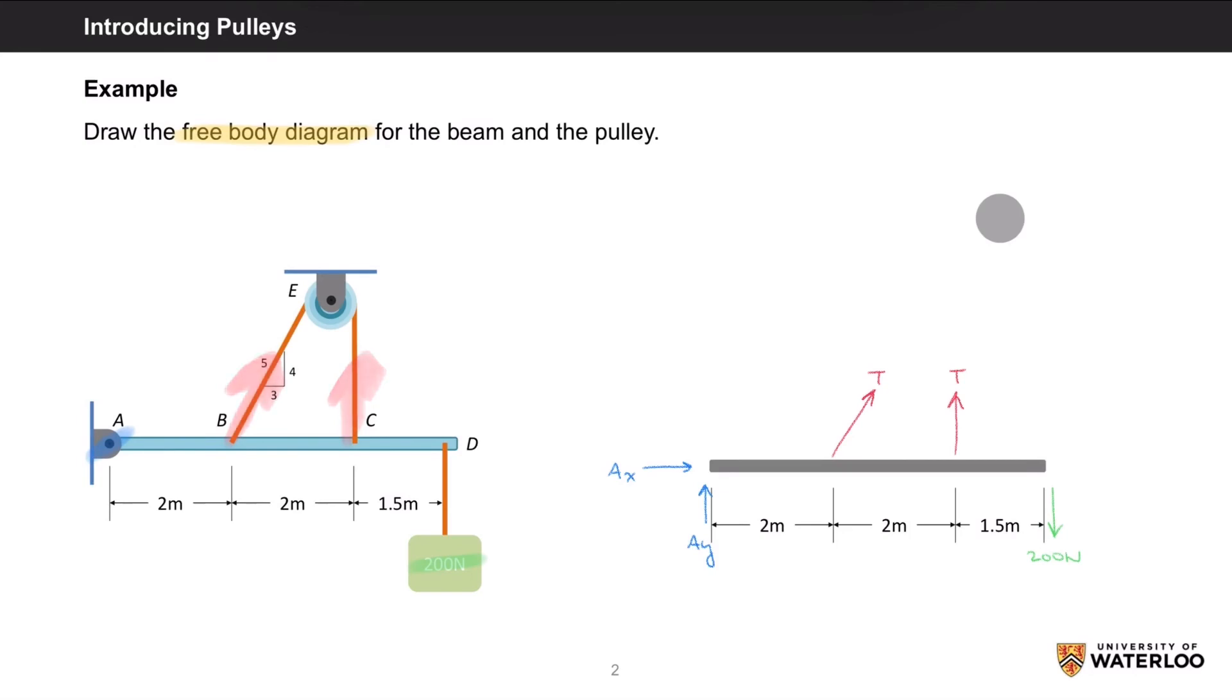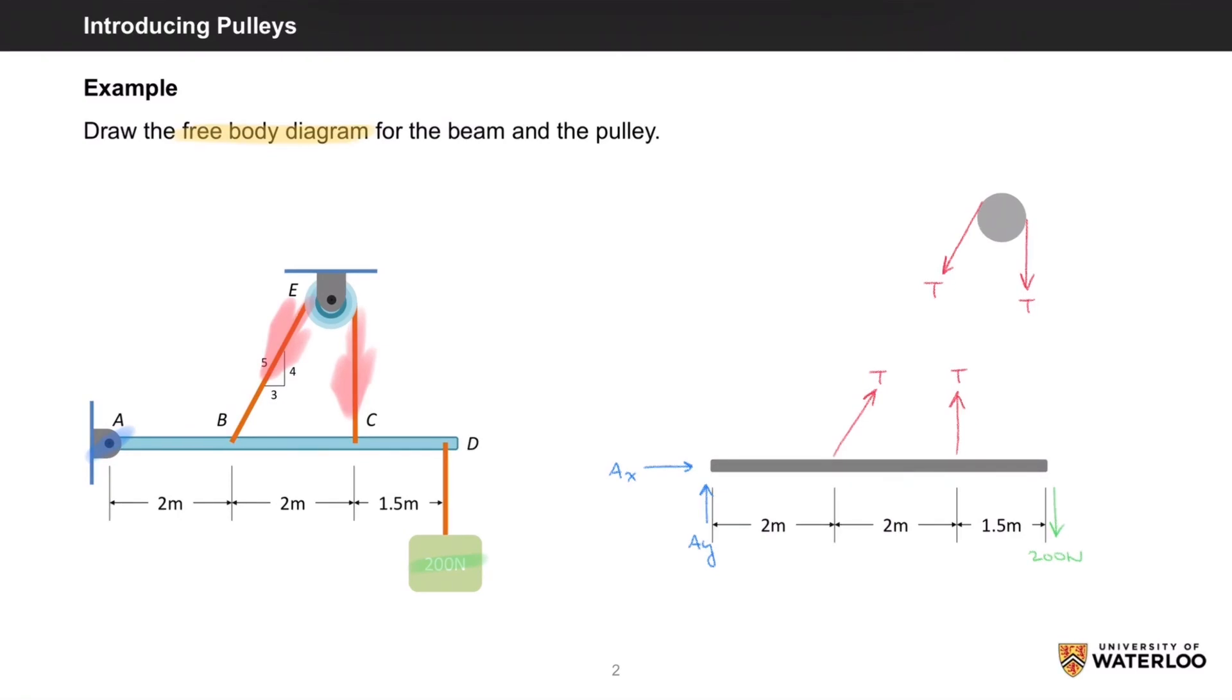As for the FBD of the pulley, again, we have the two ends of the rope, which will be in tension, and so we can draw them in the opposite direction of what we used for the beam, since our system is in equilibrium, and these are internal forces that will sum to zero. And don't forget, we need to add the support reactions for the connection between the pulley and the ceiling, so we'll add reaction forces EY and EX.